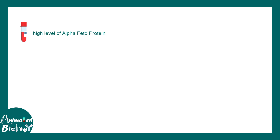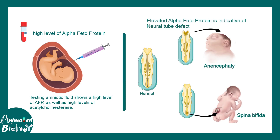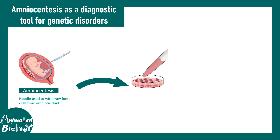For example, a high level of alpha-fetoprotein is a biomarker indicative of neural tube defects like anencephaly or spina bifida. Not only neural tube defects, but genetic defects can also be screened using amniocentesis.